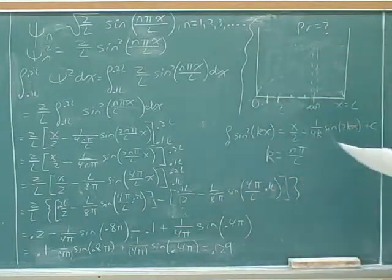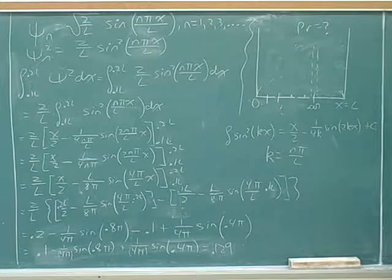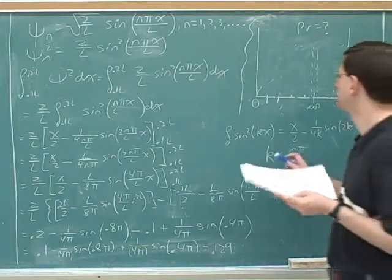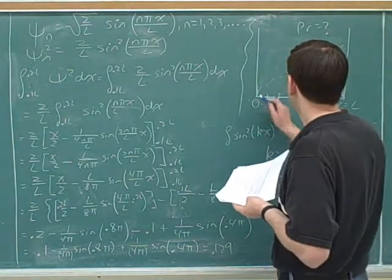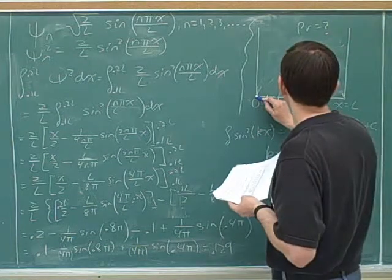What would n be in this problem? It's 1 — because it's the ground state. So I'm just going to put in one half wavelength.